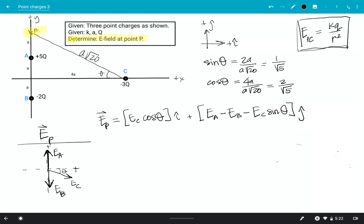So now we just need to sub in for each one of these, we have our cosine theta and sine theta all figured out, but we need to then figure out the magnitudes or express the magnitudes for EA, EB, and EC. So let's do that now.